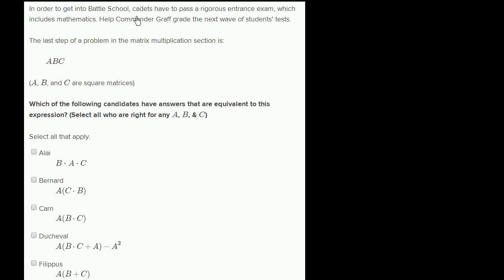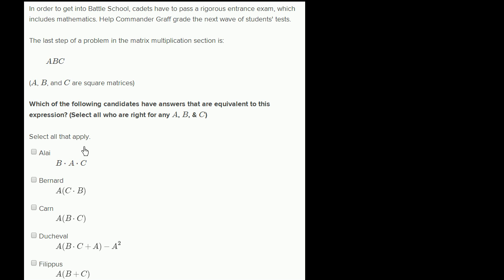In order to get into battle school, cadets have to pass a rigorous entrance exam, which includes mathematics. Help Commander Graf grade the next wave of students' tests. The last step of a problem in the matrix multiplication section is the matrix A times B times C, where A, B, and C are square matrices. Which of the following candidates have answers that are equivalent to this expression? Select all who are right for any A, B, and C.